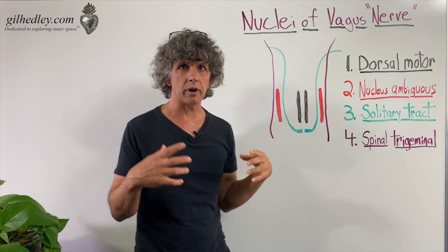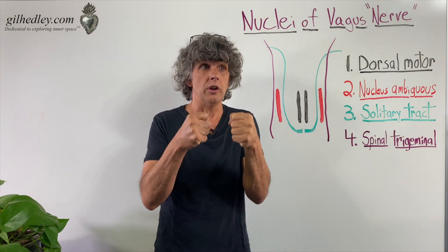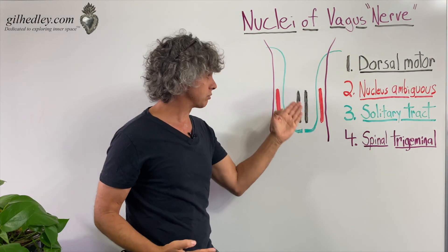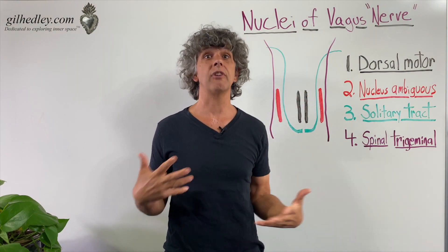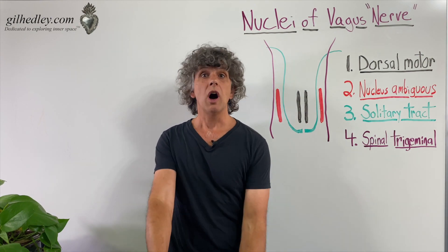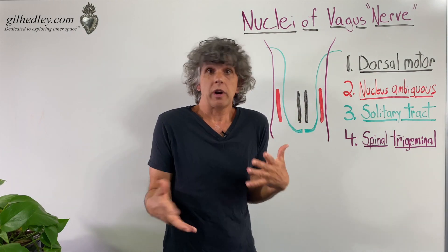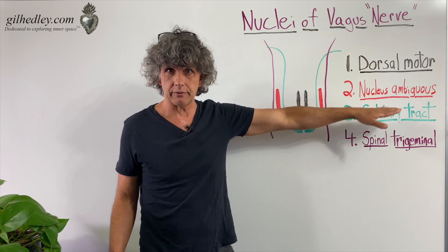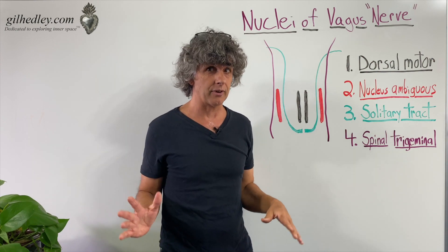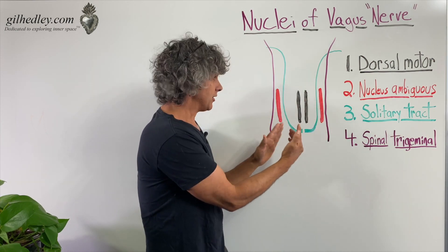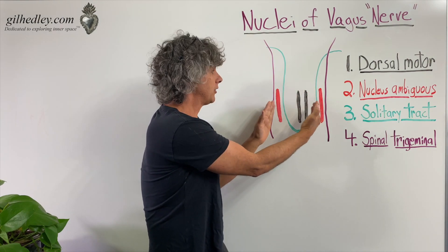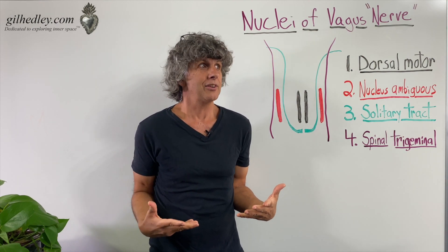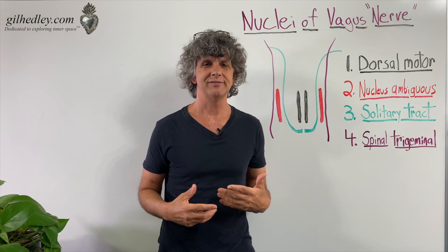The nucleus ambiguus and the dorsal motor nucleus are much more substantial in their contribution to the vagus nerve bundle. Think of it as a grouping, a complex. Because they're coming from different places on the medulla oblongata, they're having different functions, and that's why the vagus nerve is so interesting — it's distributed throughout the body, touching the same organs and doing different things with them. So there's a beginning intro to the vagal nuclei.